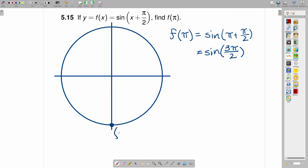The coordinates of this point are 0, negative 1. You know that the first component is the cosine. The second component is the sine. So the sine of 3 pi over 2 is equal to negative 1.